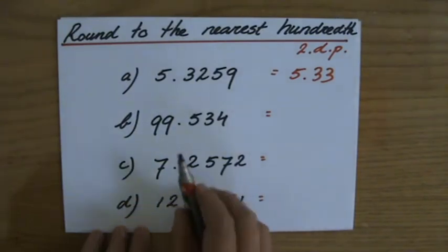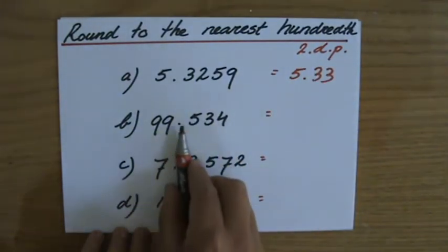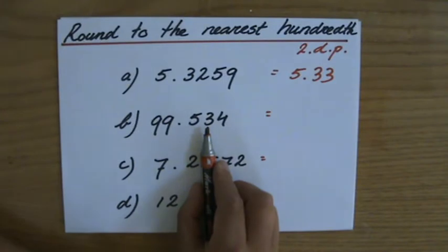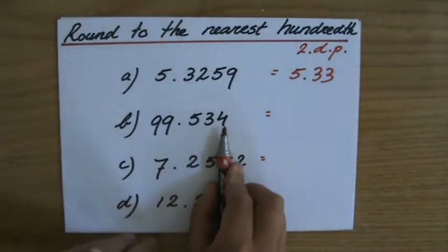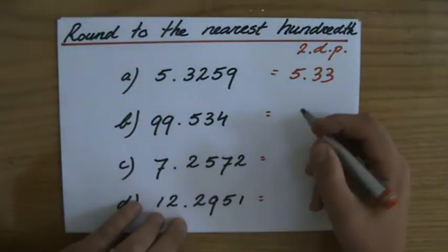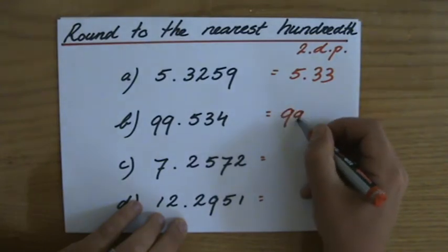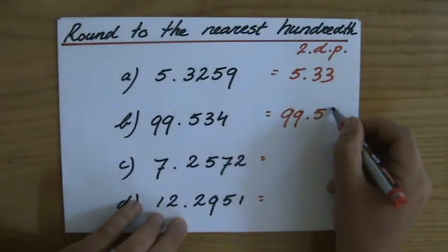99.534, two decimal places. 3 stays at 3 or goes up to a 4. That depends on the next one. It's less than 5, so it's going to stay at 3. 99.53.